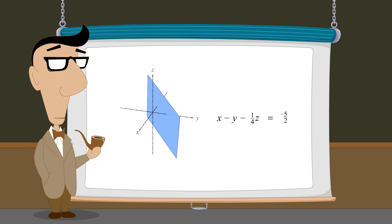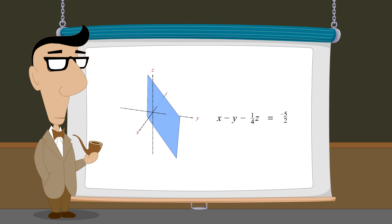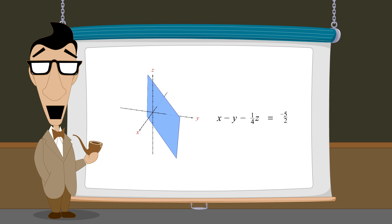Just as in the previous example, this system has infinitely many solutions corresponding to the infinite number of points contained in the plane described by this equation. This infinite solution set can now be written in parametric form as we will see after the next lecture.